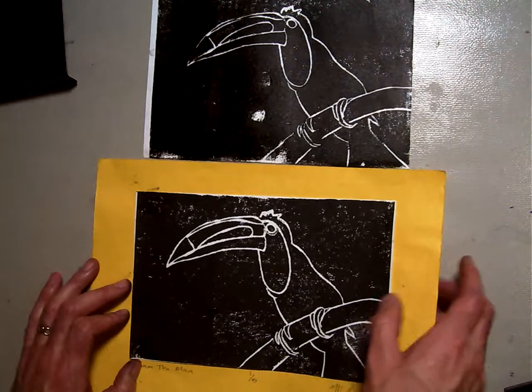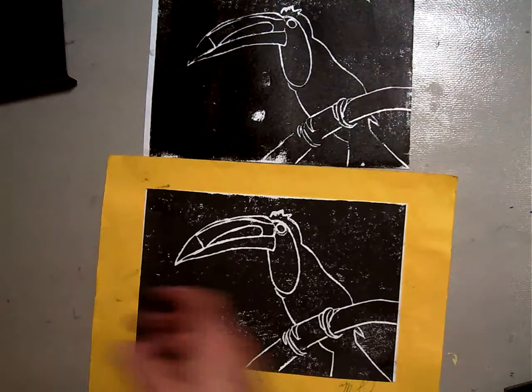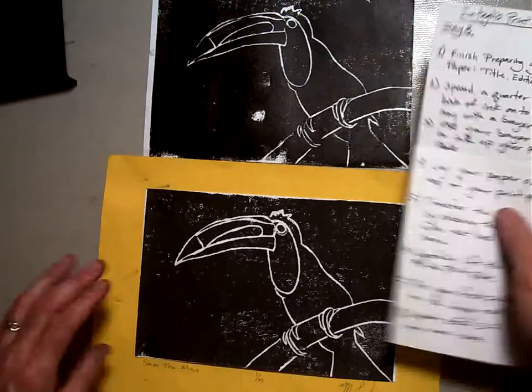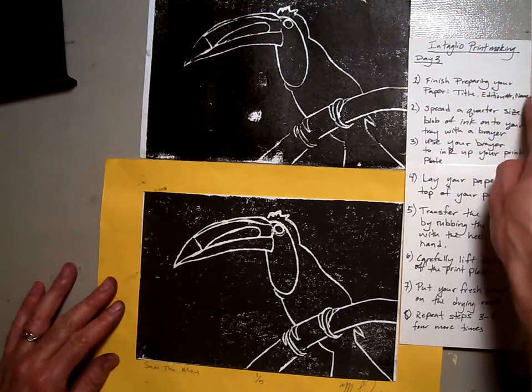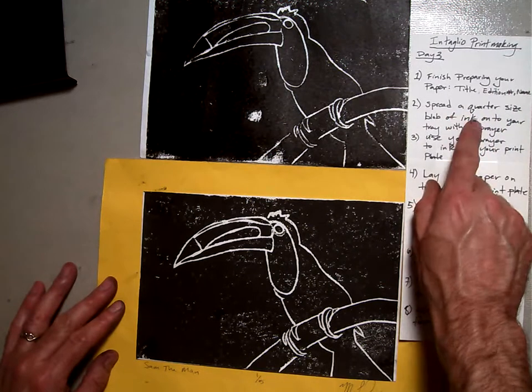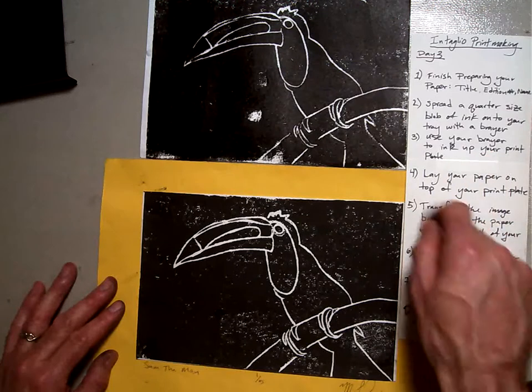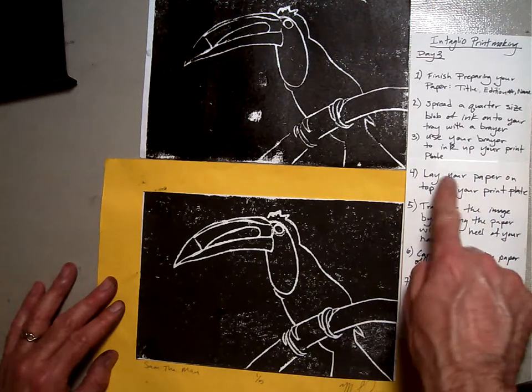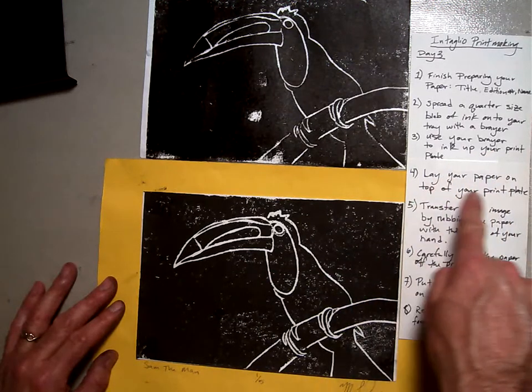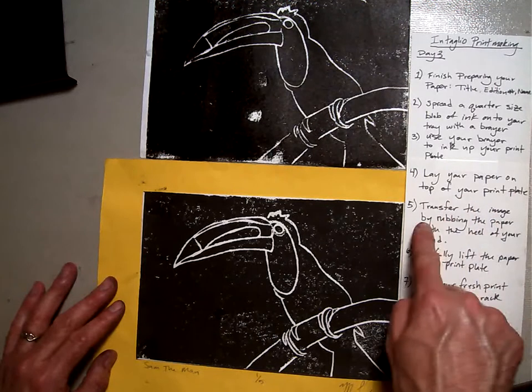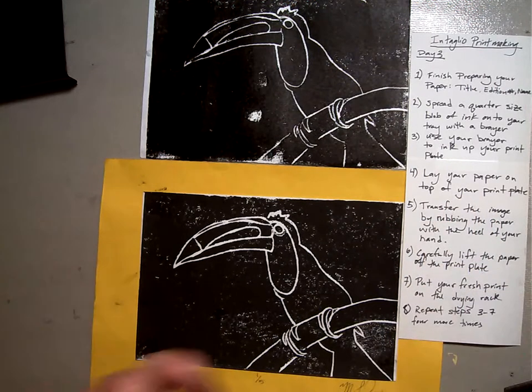So, today what you're going to do is you are going to make sure all your papers are labeled with your title, edition number, and name. Roll your blob of ink onto your tray with your brayer. Use your brayer to ink up your print plate. Then lay your paper on top of your print plate. And then transfer the image by rubbing the paper with the heel of your hand.